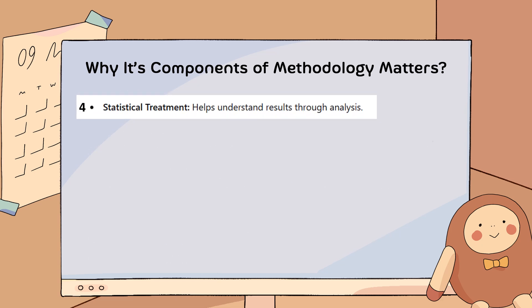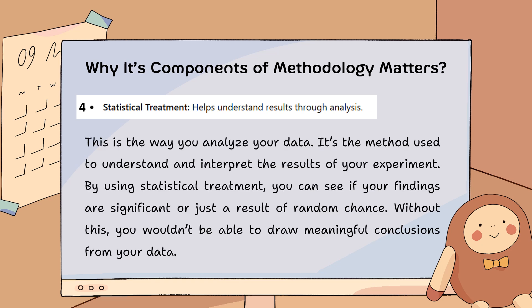Fourth, statistical treatment helps you understand results through analysis. This is the way you analyze your data — the method used to understand and interpret the results of your experiment. By using statistical treatment, you can see if your findings are significant or just a result of random chance. Without this, you wouldn't be able to draw meaningful conclusions from your data.